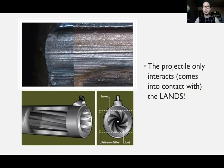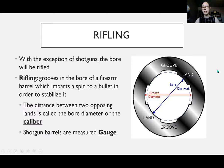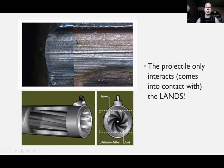With rifling, when it comes to firearms analysis and comparison, your projectile is only going to interact with the lands — not the grooves, because the grooves are lower and the bullet can't reach those areas. The bullet only touches and comes into contact with the lands when fired. That's where we see the striations that allow us to compare ammunition components collected at a crime scene to tie certain bullets back to a specific gun.